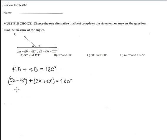Now remove the parenthesis. 5X minus 48 plus 3X plus 20 equals 180. Solve for X. Combine like terms.